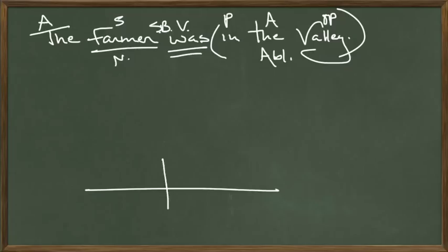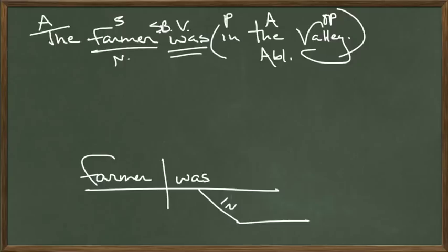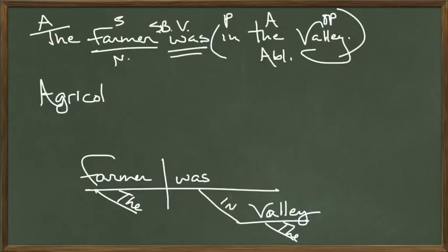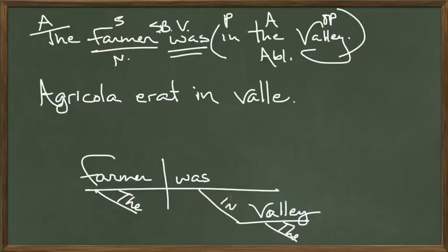Let's diagram this. Farmer — was — in — valley, then add the article adjectives: 'The farmer was in the valley.' The preposition line looks like an adjective, but at the bottom of it we add a straight stick out for the object of the preposition. Now translate into Latin: Agricola erat in valle. The word for valley is vallis, but since it's third declension, ablative singular, it becomes valle. Agricola in valle erat.